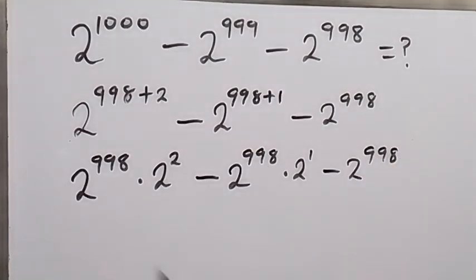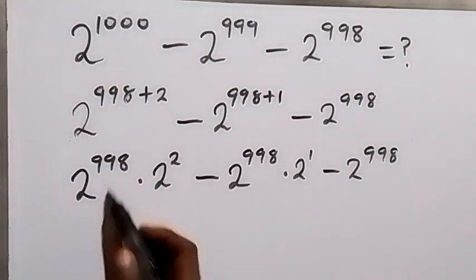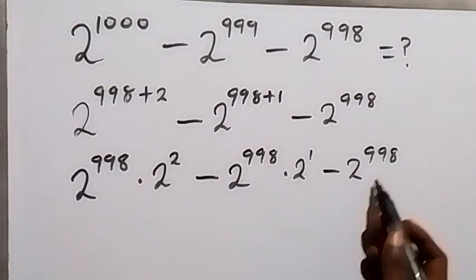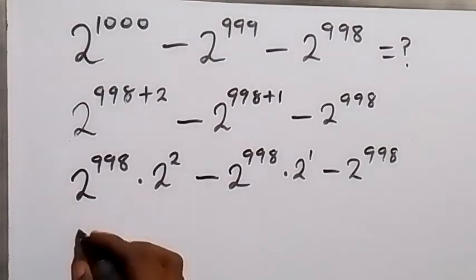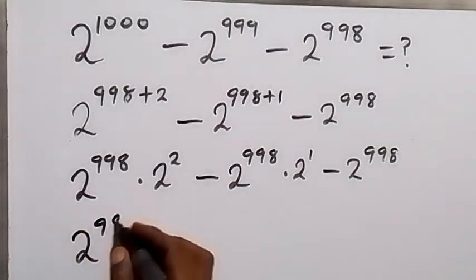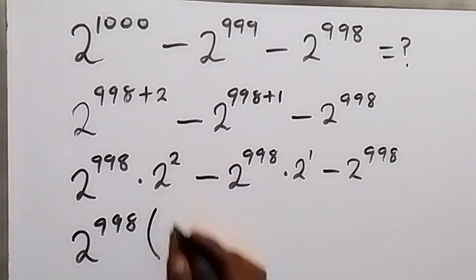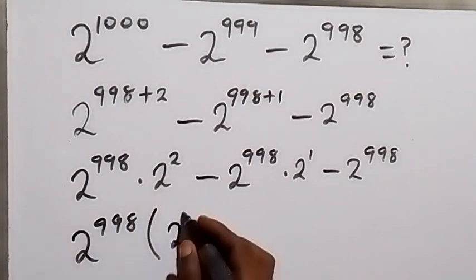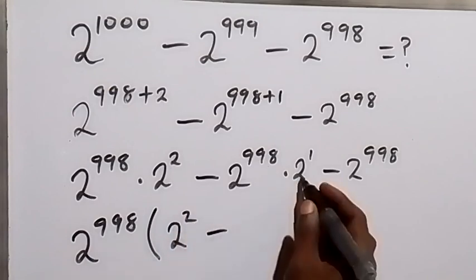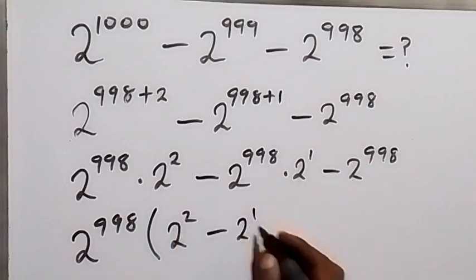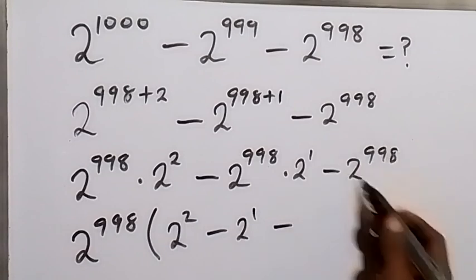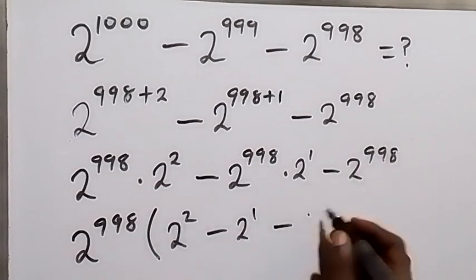Then in the next step here, we have 2 raised to power 998 common here, so let's bring it out. This will become 2 raised to power 998 into bracket. What is left here? We have 2 squared, then minus 2 raised to power 1, then minus—we brought everything out—so we are left with 1 there.